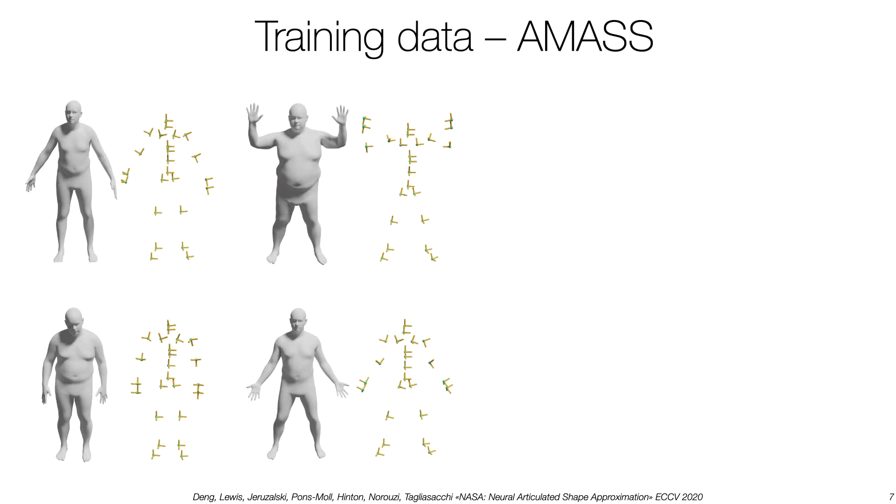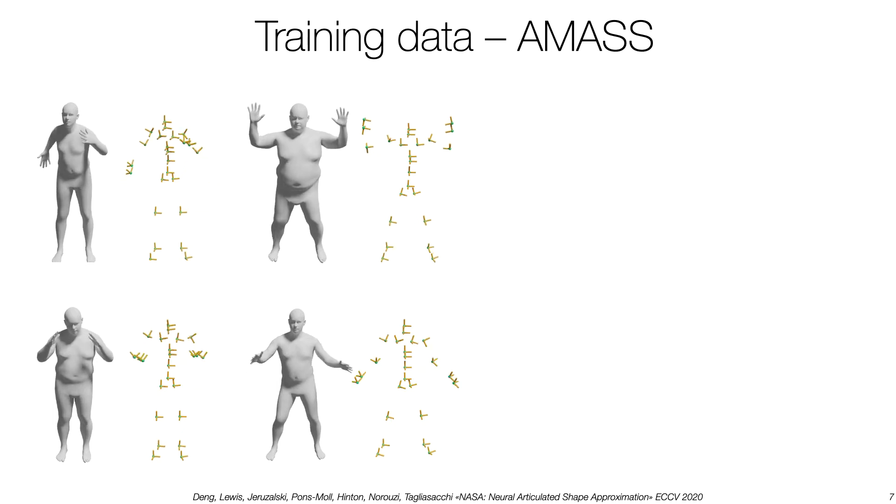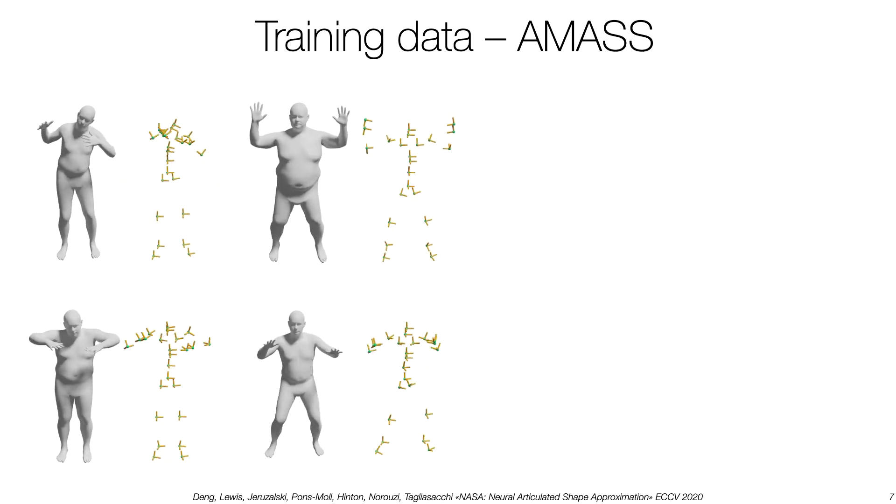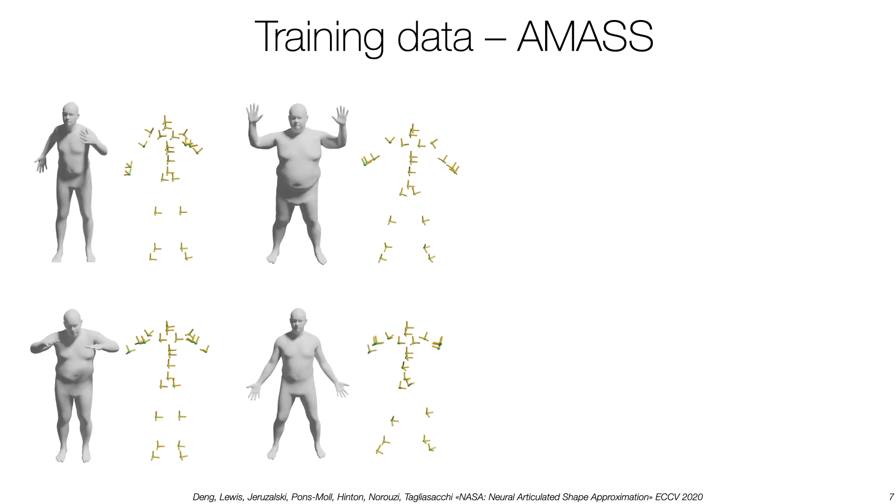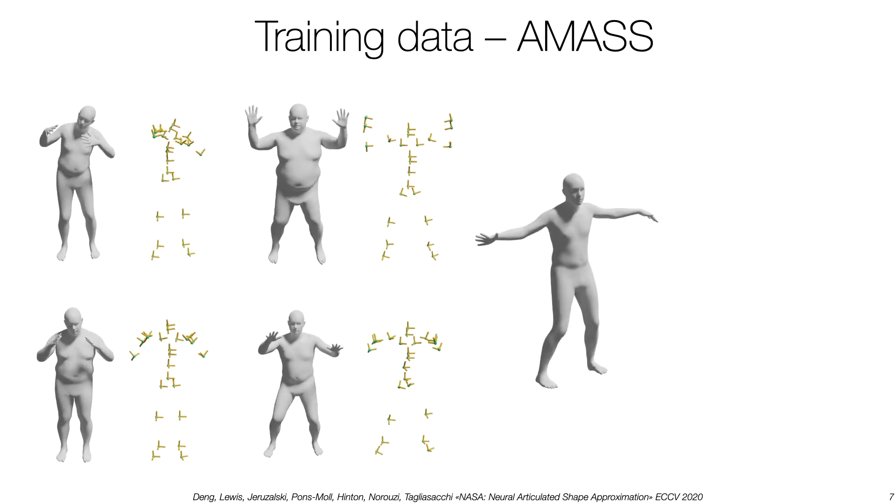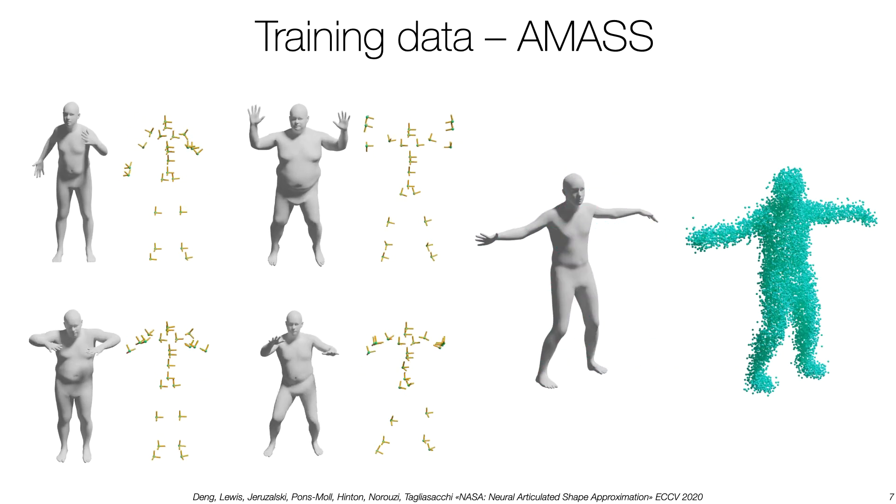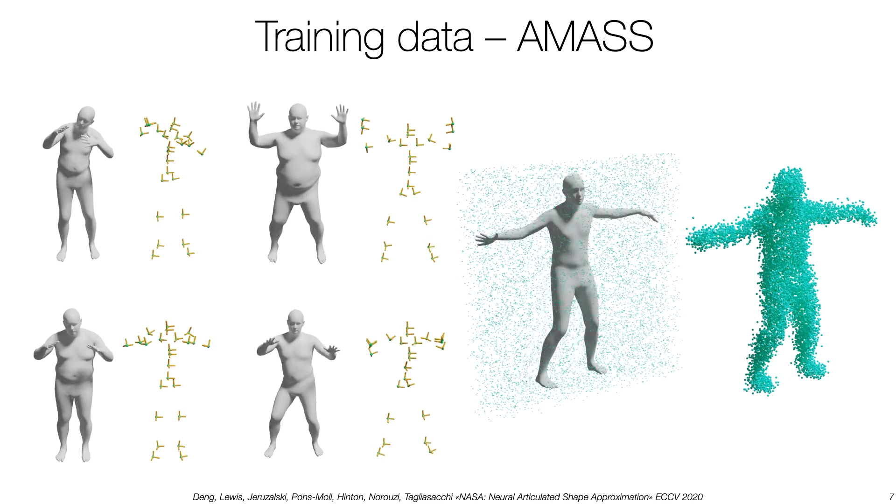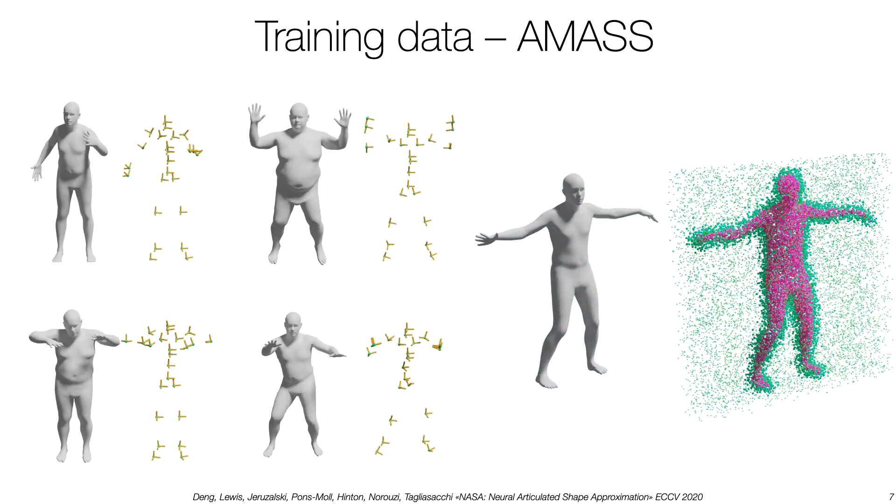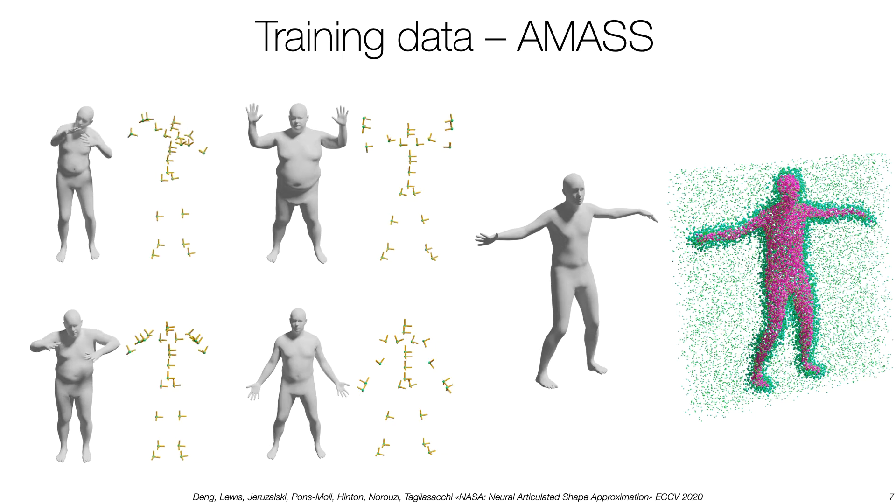To train our model, we employ the recently introduced AMAS dataset. This dataset contains a large variety of digital human subjects as well as animations. For each frame, we sample points in the neighborhood of the mesh as well as in the bounding box volume. We then compute the inside-outside label by tracing a ray from each point.